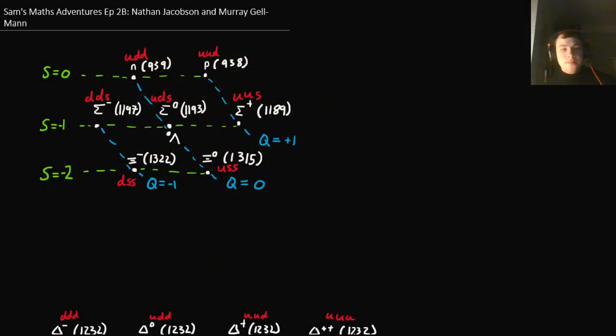Anyway, so he had his sort of quark periodic table, and he tried to work out how to explain these. So, let's swap over. Here we go. So, what I have here is called the JP equals 1/2 plus octet of baryons.